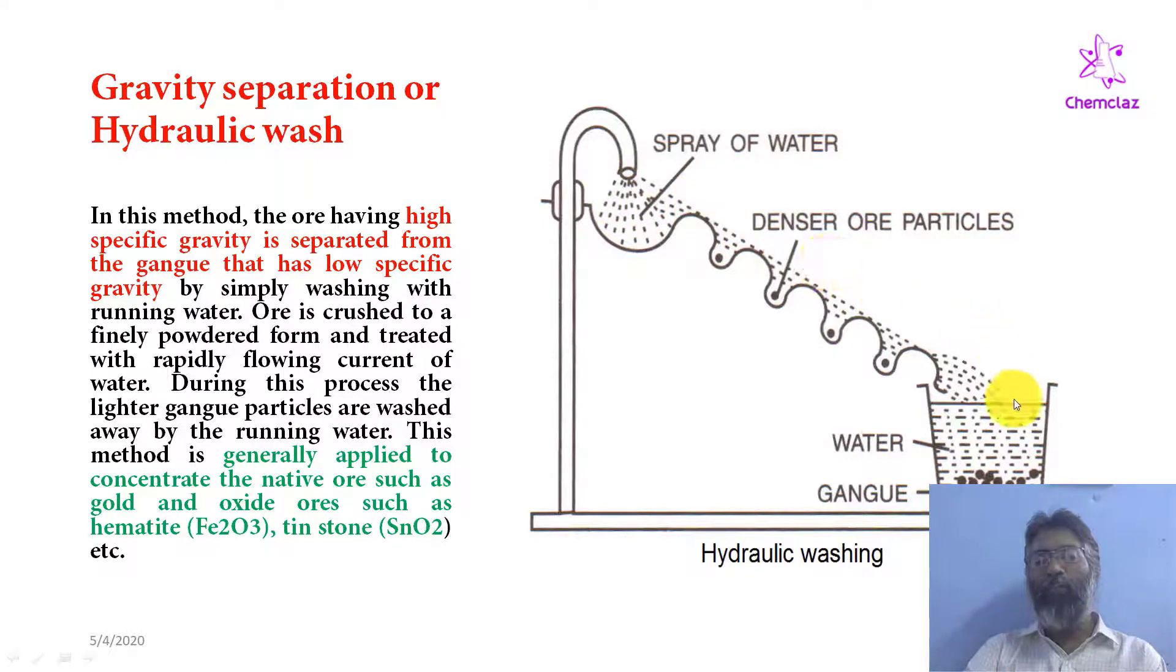The lighter gang particles are washed away with water and collected at the bottom of the sloping heart. The heavy metal ore is collected at the top of the sloping heart.